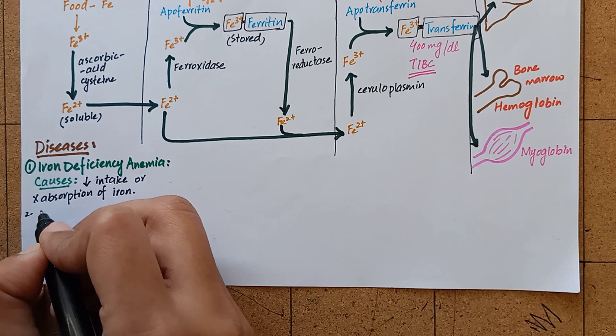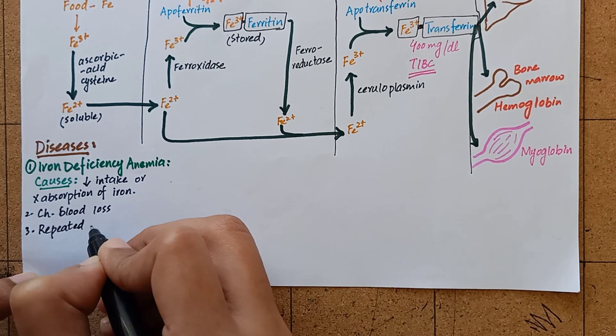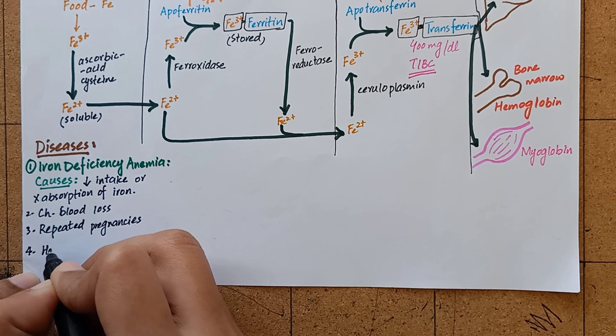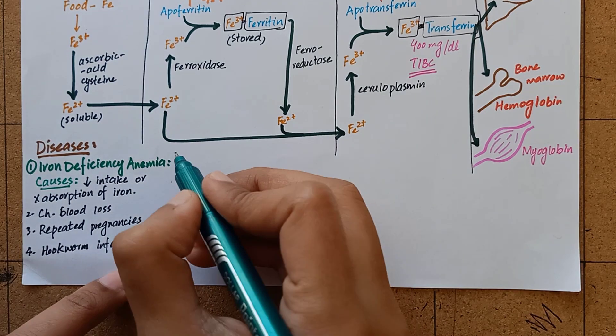chronic blood loss, repeated pregnancies, and hookworm infection. It mostly occurs in growing children, adolescent girls, pregnant and lactating women.